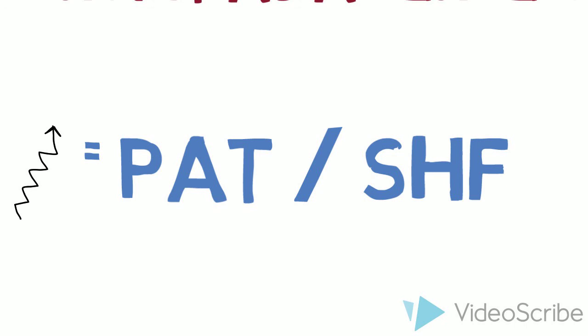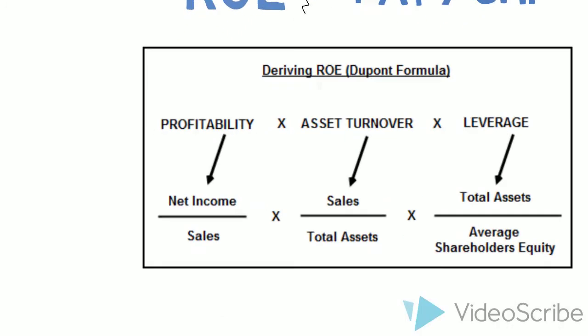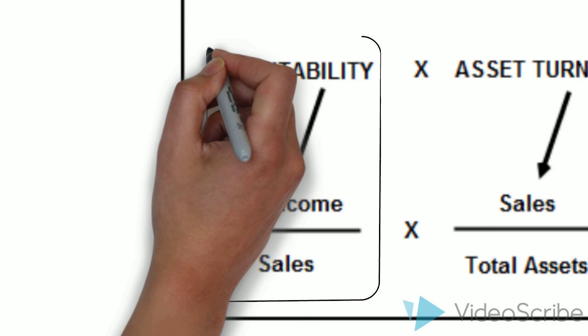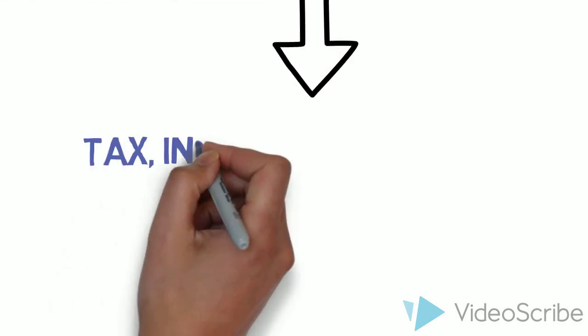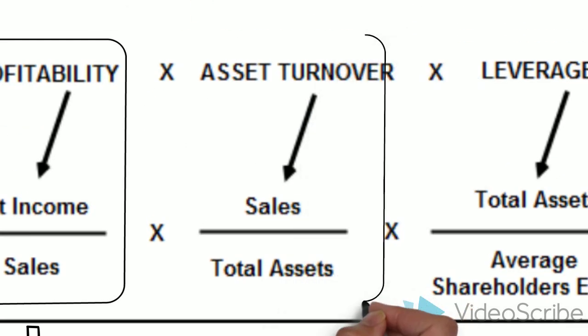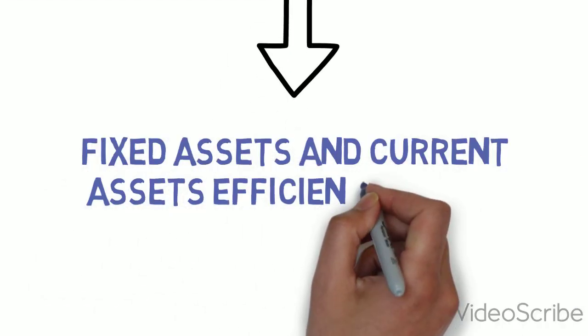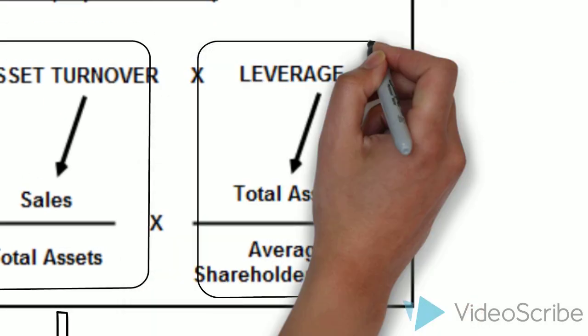It can be further decomposed into the product of profitability, efficiency, and risk or leverage. One: Profitability, which equals profit after tax divided by revenue, which can be further decomposed into tax factor, interest factor, and operating efficiency factor. Two: Efficiency, which equals revenue divided by total assets, which can be further decomposed into fixed assets and current assets efficiency. Three: Risk or financial liability leverage, which equals total assets divided by shareholders' fund.